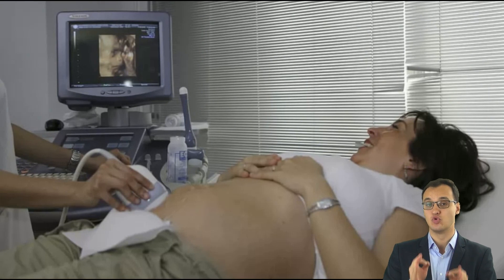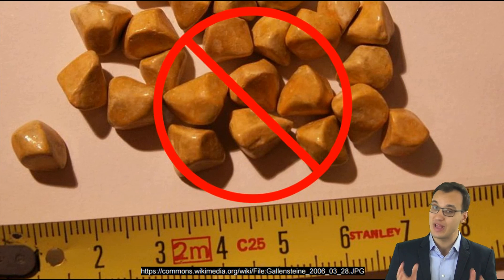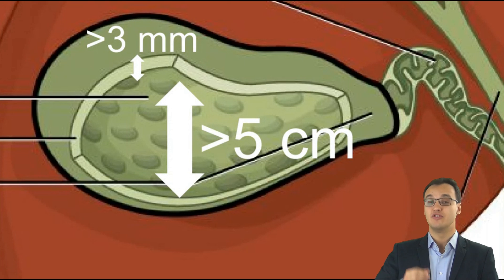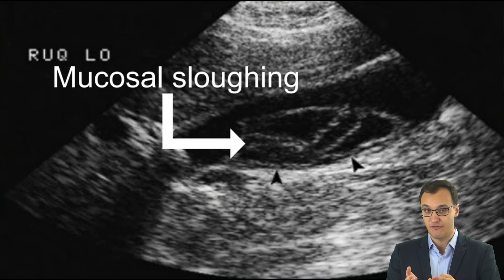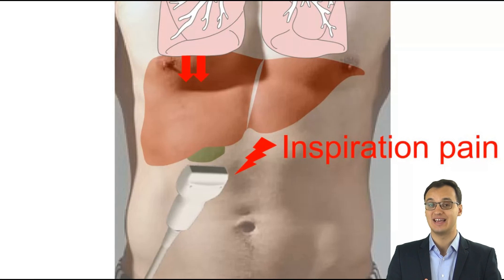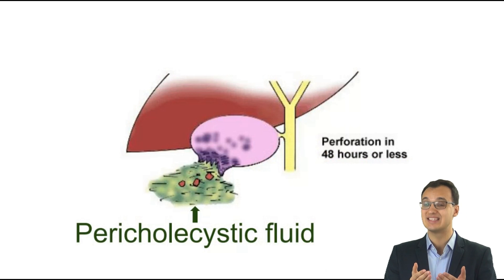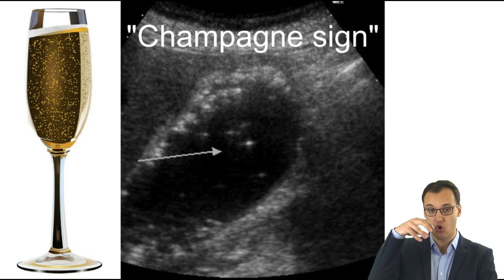The most important test to perform is ultrasonography. Ultrasonography can show that there are no gallstones or sludge, more than 3 mm gallbladder wall thickening, more than 5 cm gallbladder distension, a striated gallbladder with mucosal sloughing, a positive Murphy's sign induced by the ultrasonographic probe, pericholecystic fluid indicating perforation that could lead to abscess formation, and champagne sign with gas bubbles in the gallbladder fundus.